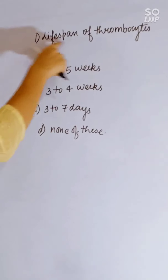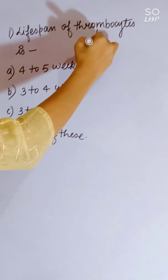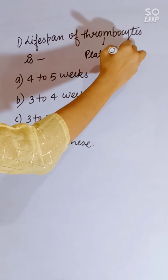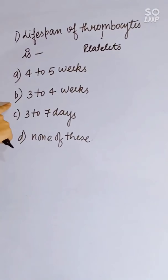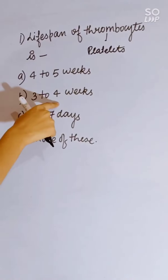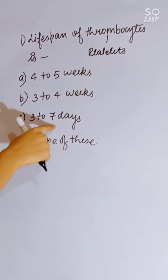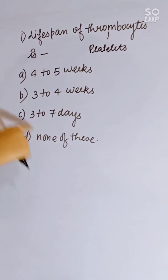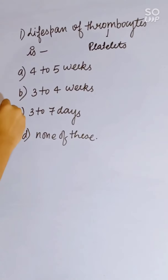Life span of thrombocytes — thrombocytes meaning platelets. Options: 3-5 weeks, 3-4 weeks, 3-7 days, or none of these. Correct answer is 3-7 days.